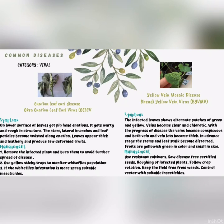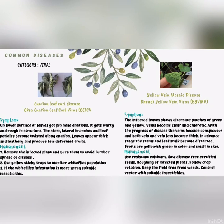The second disease is Yellow Vein Mosaic Disease, also known as Bhendi Yellow Vein Virus. The symptoms are infected leaves showing alternate patches of green and yellow, and veins becoming clear and chlorotic. The management includes using resistant cultivars, sowing disease-free certified seeds, roguing off infected plants, following crop rotation, keeping the field free from weeds, and controlling the vector with suitable insecticides.